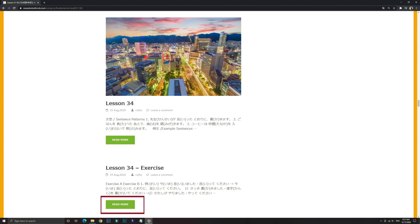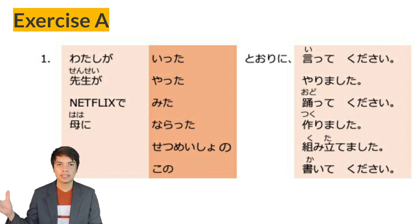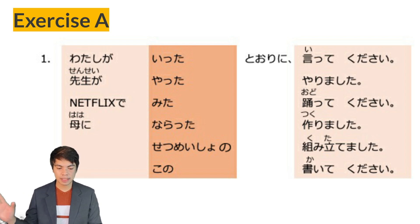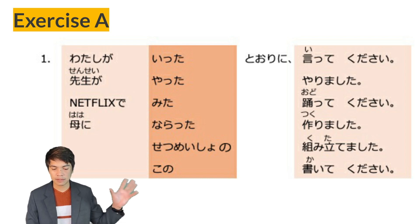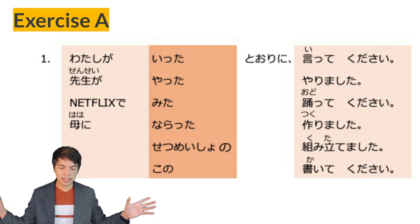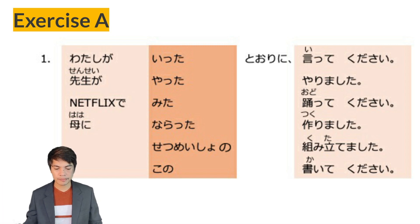Lesson 34, Exercise A. Let's read number one. Watashi ga itta tori ni itte kudasai — just like I said, from the verb iimashita — please say it. Next: Sensei ga yatta tori ni yarimashita — the same way the teacher did, or just like the teacher did — yarimashita, I did it.